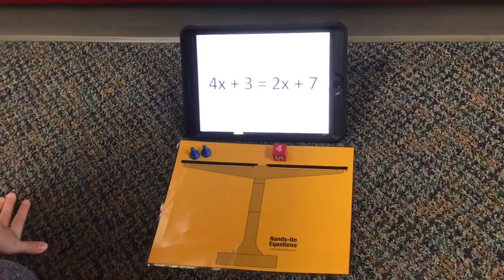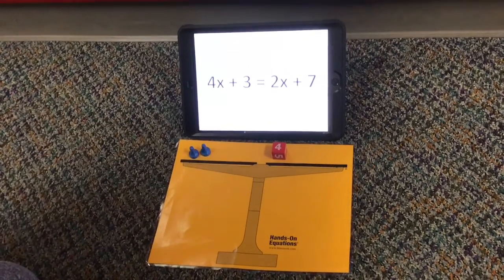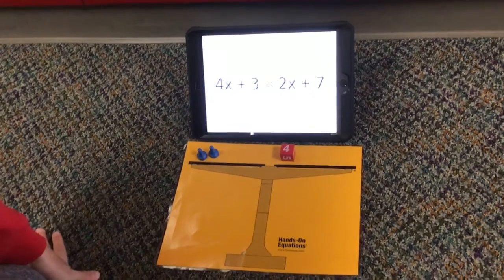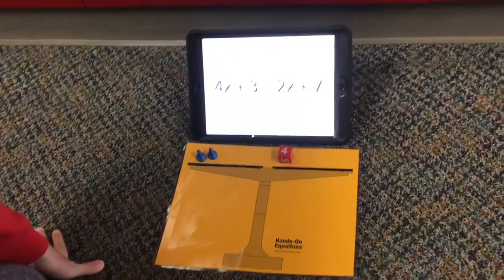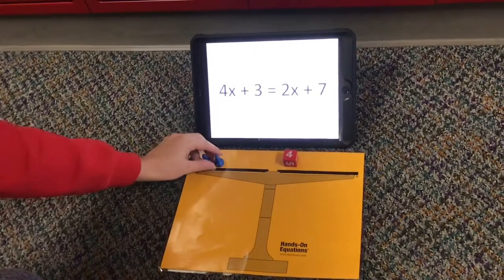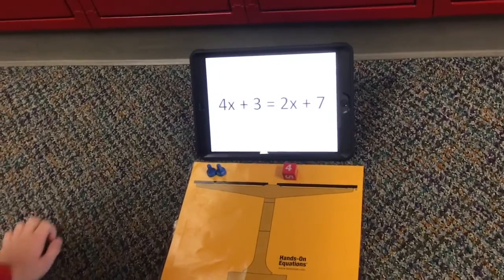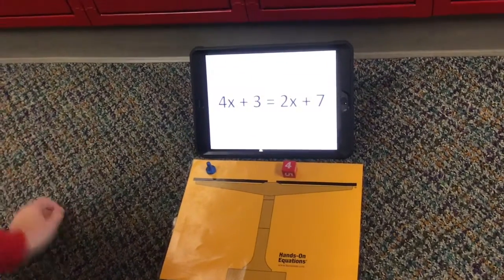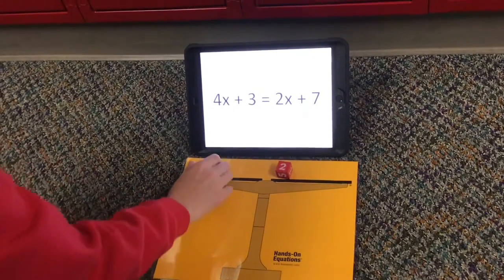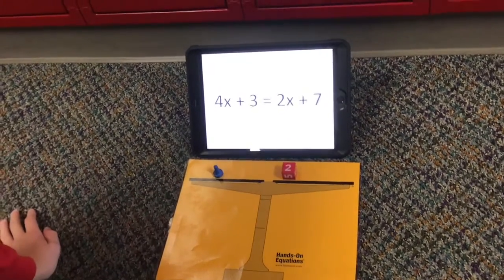And then we can get our answer because if you don't have anything on this side and you have everything on this side you can't get an answer. So now we have to divide each by two. So now we divide 2x by 2 and you get x. You divide 4 by 2 and you get 2. So now x equals 2.